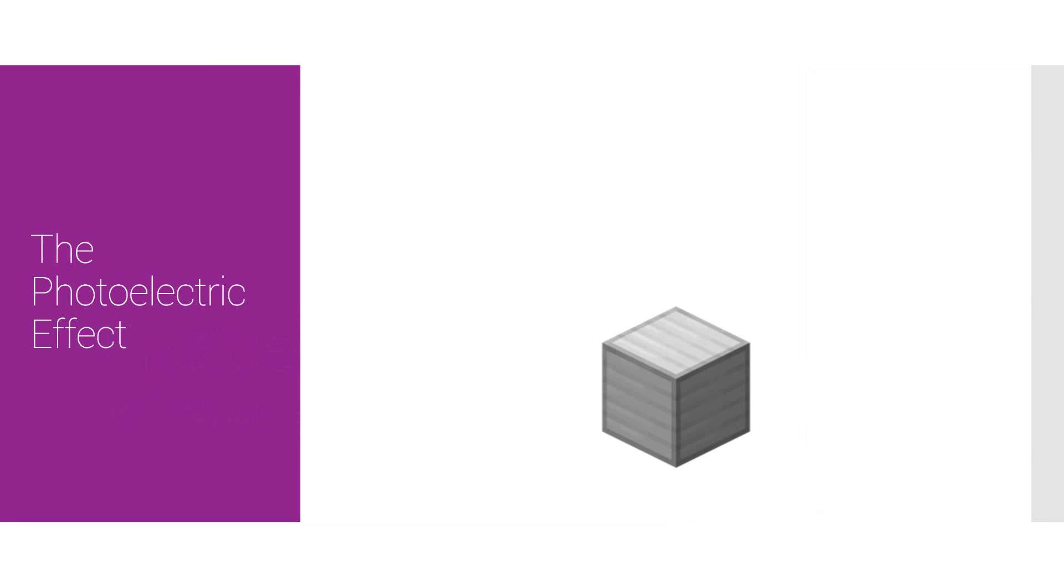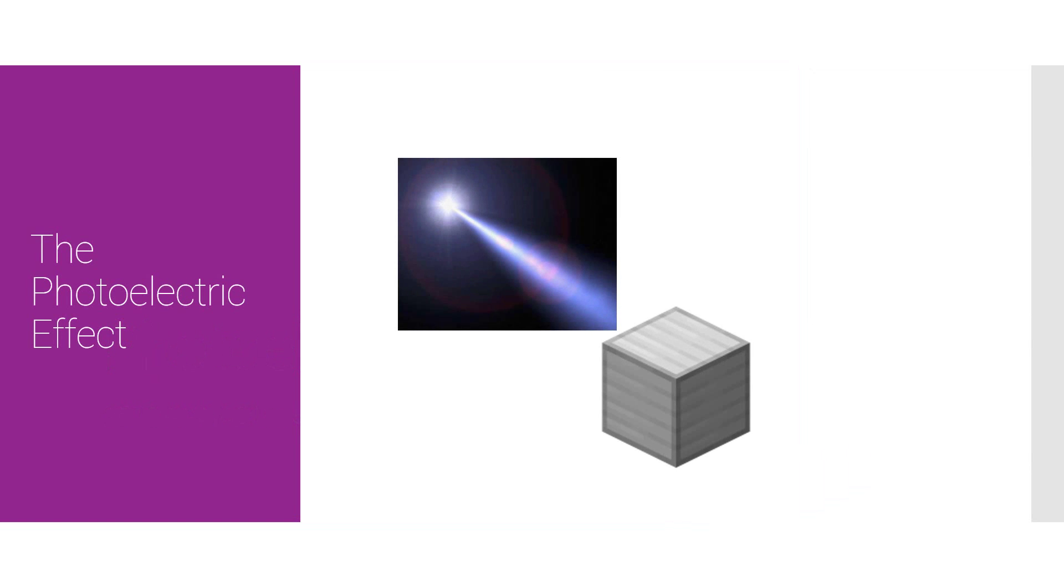So, if you have a metal, here we have an iron block, and you shine a light of high enough frequency onto the surface of the metal, electrons shall be emitted.